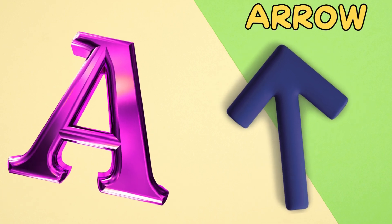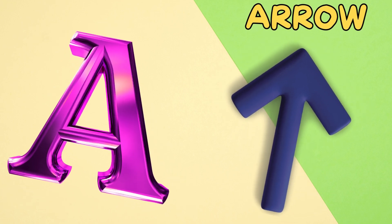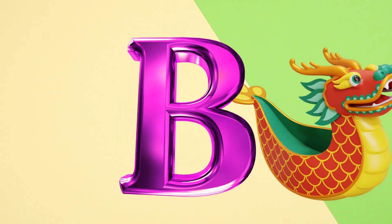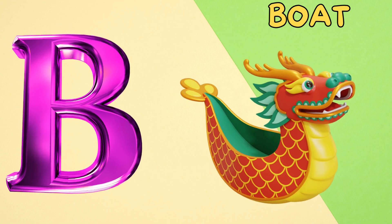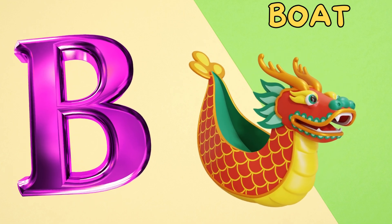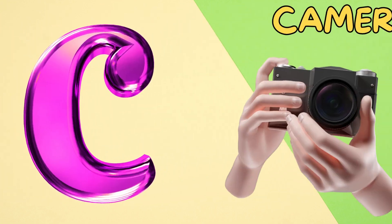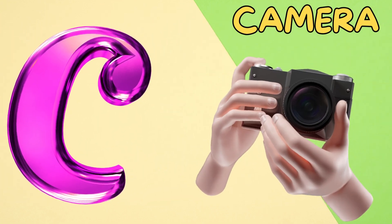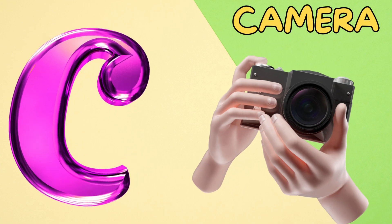A is for arrow. A, a, arrow. B is for boat. B, b, boat. C is for camera. C, c, camera.